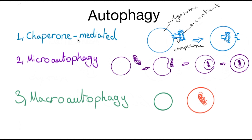Number two would be microautophagy, which is the inward invagination of the lysosomal membrane. So once again, this is the lysosome, and the content would just be trapped inside of an inward invagination of the lysosome and eventually end up inside of the lysosome to be digested by the lysosomal enzymes.